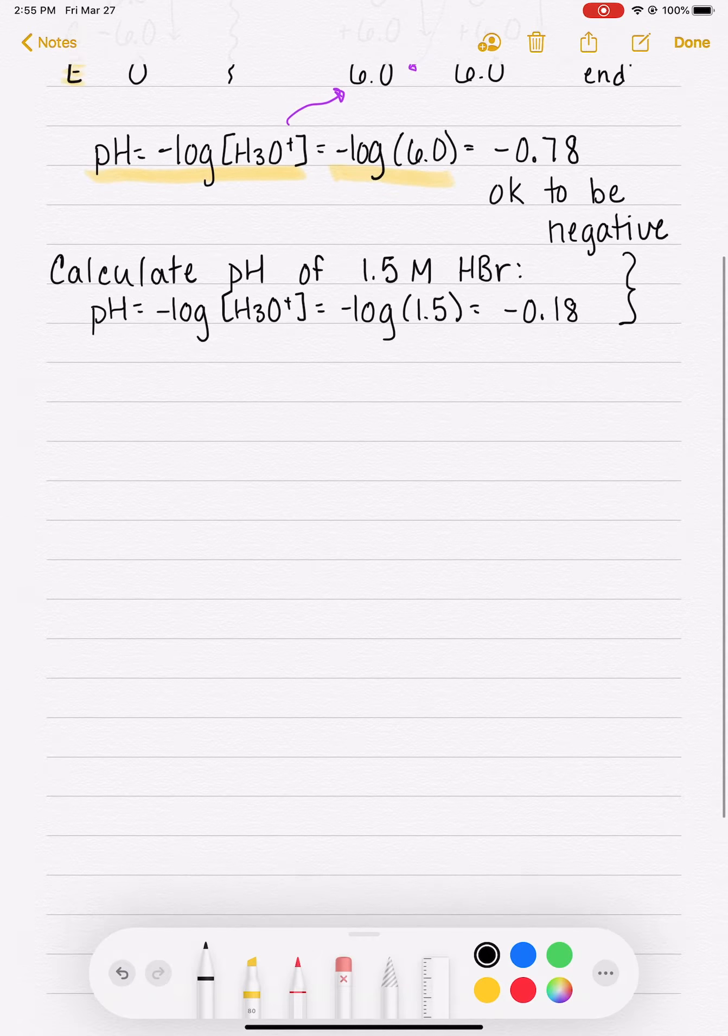So where we left off, we had just done two pH calculations from strong acids, HCl and HBr. I showed you how to do it with an ICE table, and then I showed you there's a shortcut. You can almost always use a shortcut, but you do have to be a little bit careful about using that shortcut.